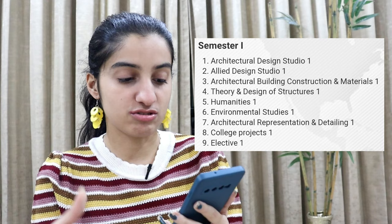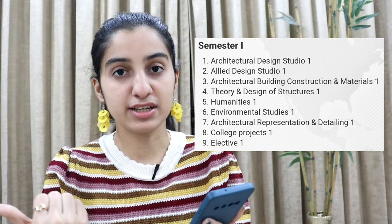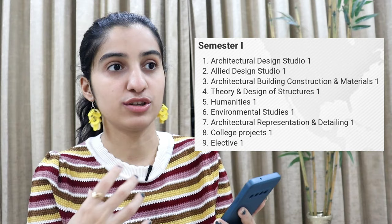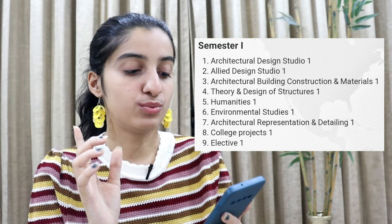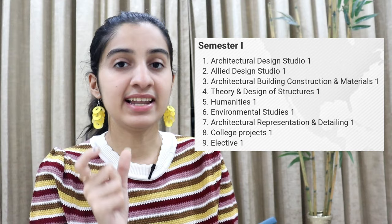First year subjects included: Architecture Design Studio, Allied Design Studio (Basic Design), Architectural Building Construction and Materials, Theory of Design and Structures, Humanities, Environmental Studies, Architecture Representation and Detailing, College Projects, and Electives. Architecture Design Studio is where the main projects happen. In first year we had a kiosk design and a bungalow design — simple projects where they don't expect too much detail, but you can go as creative as you want.